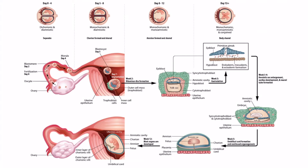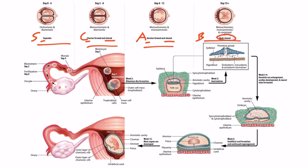We've added four different stages — 1, 2, 3, and 4 — to this image. These are the four stages you need to be aware of, because cleavage occurring in these different periods results in a different outcome. To help you remember each stage, there's a mnemonic acronym called SCAB. S indicates that everything is separate; C indicates the chorion is already formed and shared; A stands for amnion, which is formed and shared; and B indicates that the body will be shared, referring to conjoined twins.